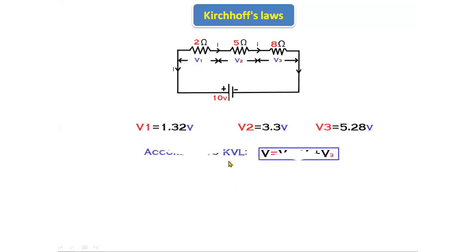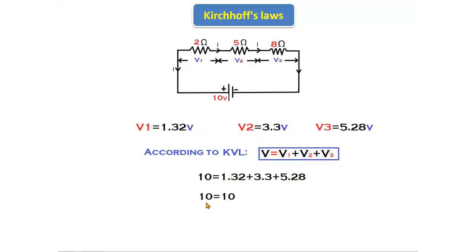By using the KVL statement — the sum of the total voltage equals the sum of the individual voltages — V equals V1 plus V2 plus V3. Substituting all values: 10 equals 1.32 plus 3.3 plus 5.28. Total voltage is 10 volts and the sum of all the individual voltages is also 10 volts. From this, we can say that for the given circuit, KVL is verified, and hence this above circuit is a valid circuit.